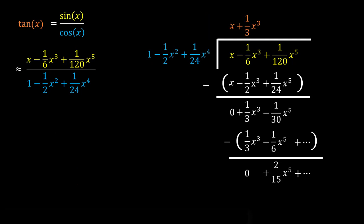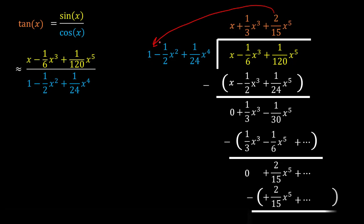Dividing the remainder two-fifteenths x to the fifth by the first term of the divisor gives two-fifteenths x to the fifth as our third term. Multiplying two-fifteenths by 1 gives two-fifteenths, and subtracting gives zero — which validates that these first three terms are the correct terms for our approximation of tangent of x.